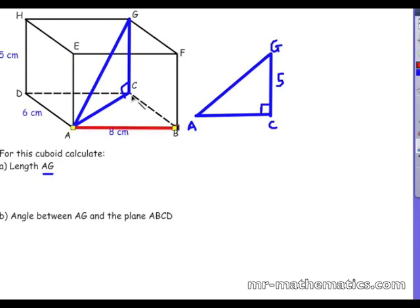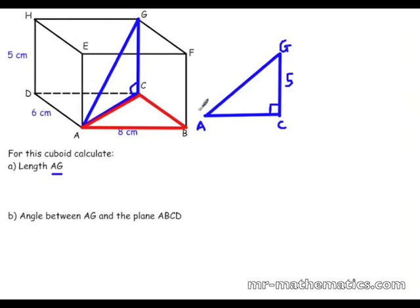And that is a right angle triangle with A, B, C, which is the red triangle. So we'll just draw a 2D version of that as well.